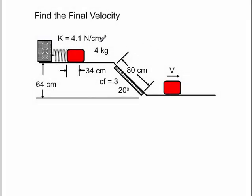This is Dr. Holt. In this video, I want to calculate the velocity of a 4 kg block that's pushed against a spring, released, slides across a surface that has no friction, goes down the incline where there is friction present, and then comes across this flat plane where there's no friction. We want to find the velocity.